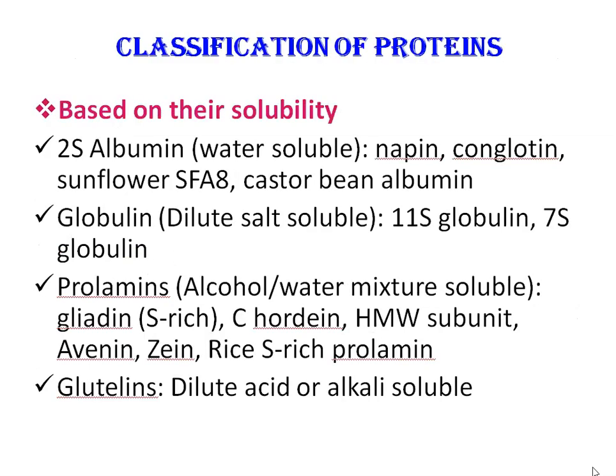Next is classification of proteins — first, based on their solubility. On the basis of solubility, seed storage proteins are of four types: 2S albumin, globulin, prolamines, and glutalins. 2S albumins are water-soluble proteins; examples include napin, conglutin, sunflower SFA-8, and castor bean albumin. Globulins are dilute-salt-soluble proteins; examples include 11S globulin and 7S globulin.